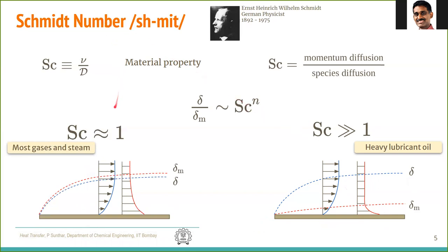A similar analogy can be given for mass transport. For mass transport, analogous to the Prandtl number, we have the Schmidt number — named after German physicist Wilhelm Schmidt. Schmidt number is also a material property denoting the ratio of momentum diffusion to species diffusion by molecular transport. Unlike Prandtl number, we don't have any liquids for which Schmidt number is much less than 1.